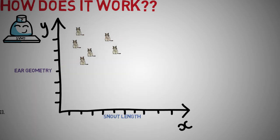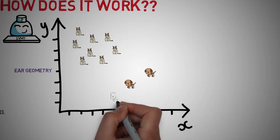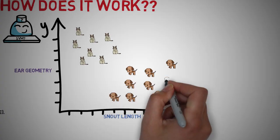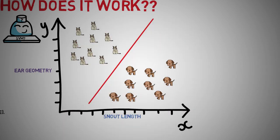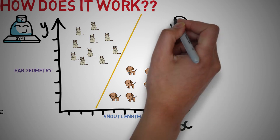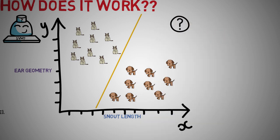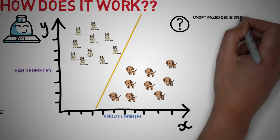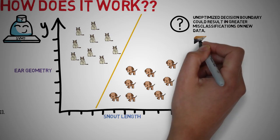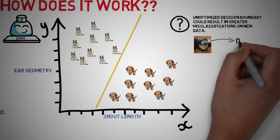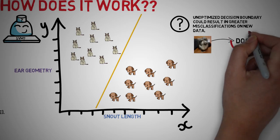So how would we decide where to draw our decision boundary? Well we can draw it over here or here or like this. Any of these would be fine, but what would be the best? If we do not have the optimal decision boundary, we could incorrectly classify a dog with a cat.